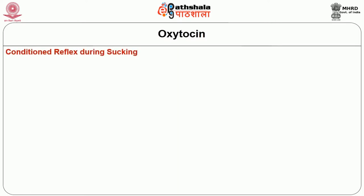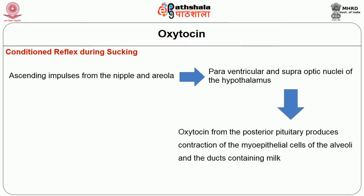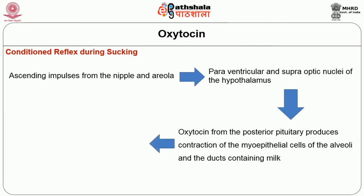We now move to conditioned reflex during sucking. Ascending impulses from the nipples and areola initiate the paraventricular and supraoptic nuclei of the hypothalamus. This in turn stimulates oxytocin release from the posterior pituitary, producing contraction of the myoepithelial cells of the alveoli and ducts containing milk — that is the milk ejection or milk let-down reflex. Milk is forced down into the ampulla of the lactiferous ducts, from where it can be expressed by the mother or sucked by the baby. This occurs within 30 to 60 seconds.